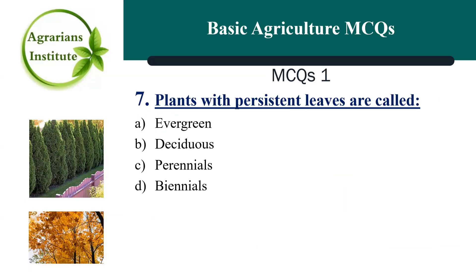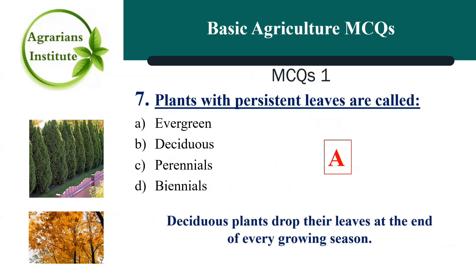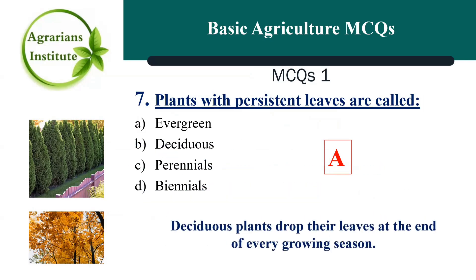Next MCQ: Plants with persistent leaves are called — the correct answer is A, Evergreen. While deciduous plants drop their leaves at the end of every growing season.